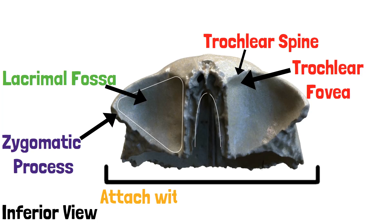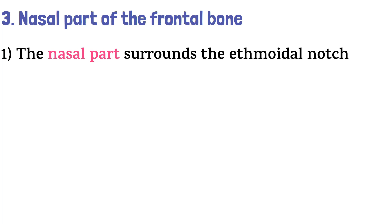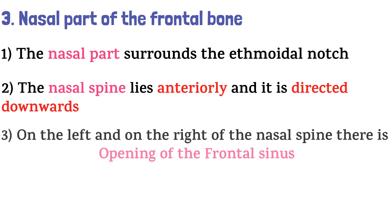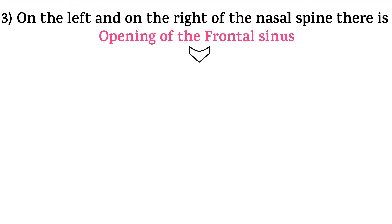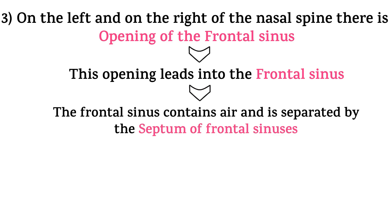With this we complete the orbital part, and move on to the last part of the frontal bone, that is the nasal part. The nasal part surrounds the ethmoidal notch. The nasal spine lies anteriorly and is directed downwards. On the left and right of the nasal spine, there is an opening of the frontal sinus, which leads into the frontal sinus. The frontal sinus contains air and is separated by the septum of the frontal sinuses.